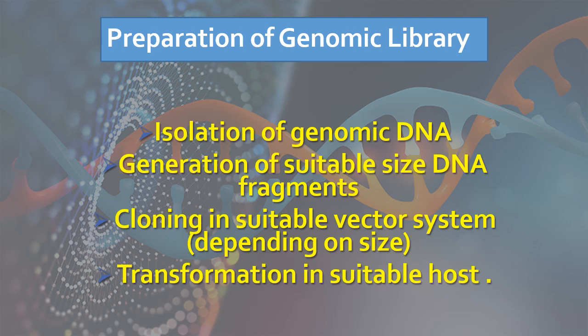Let us now discuss the preparation or construction of a genomic library. A genomic library represents the complete genome in multiple clones including small DNA fragments. Depending upon the organism and size of the genome, the library is either prepared in a bacterial vector or in yeast artificial chromosomes. The following steps are followed: first, isolation of genomic DNA; then generation of suitable size DNA fragments; cloning in suitable vectors depending on the size; and then transformation in a suitable host.